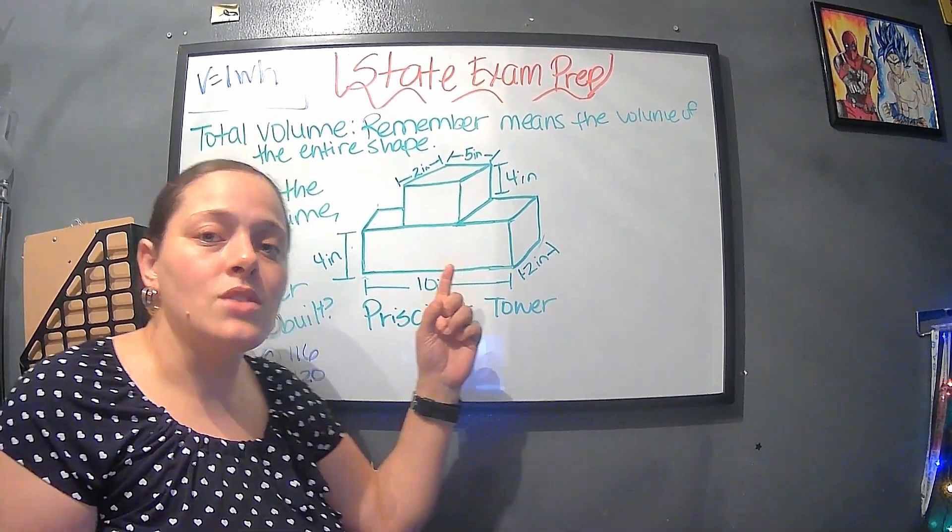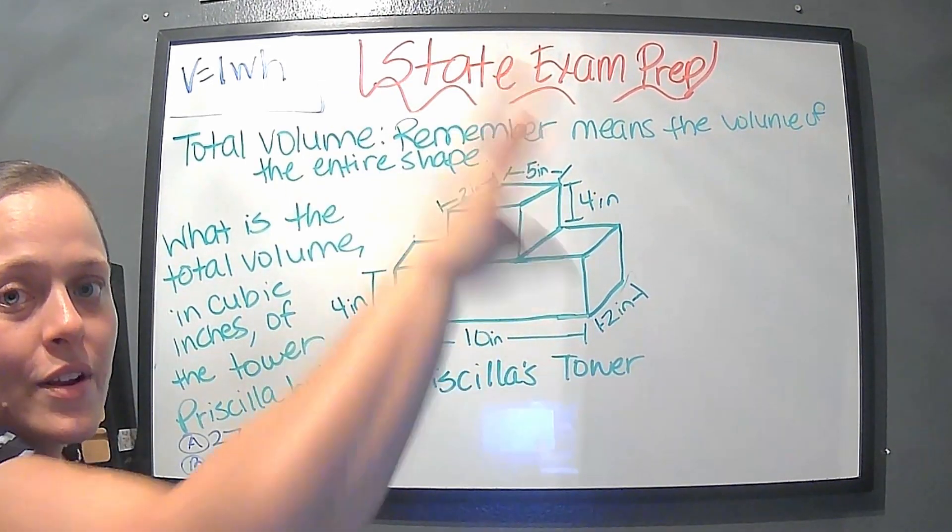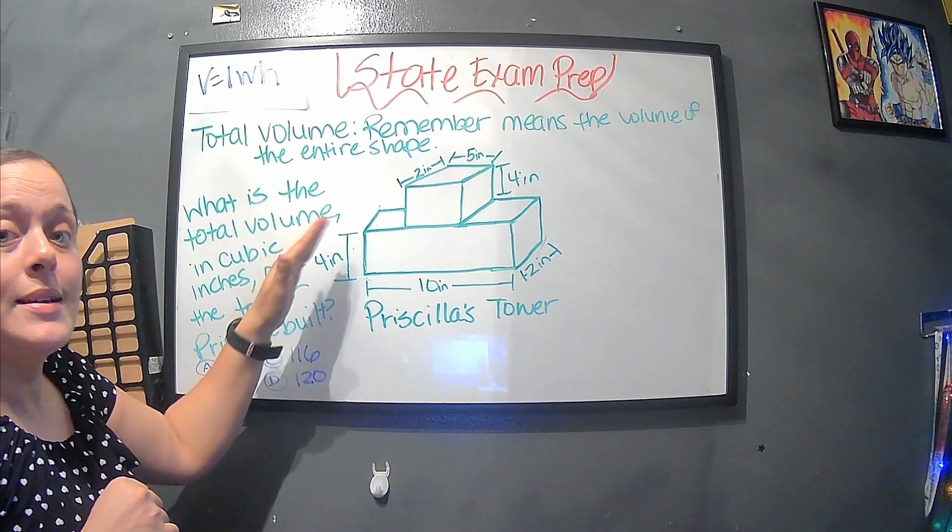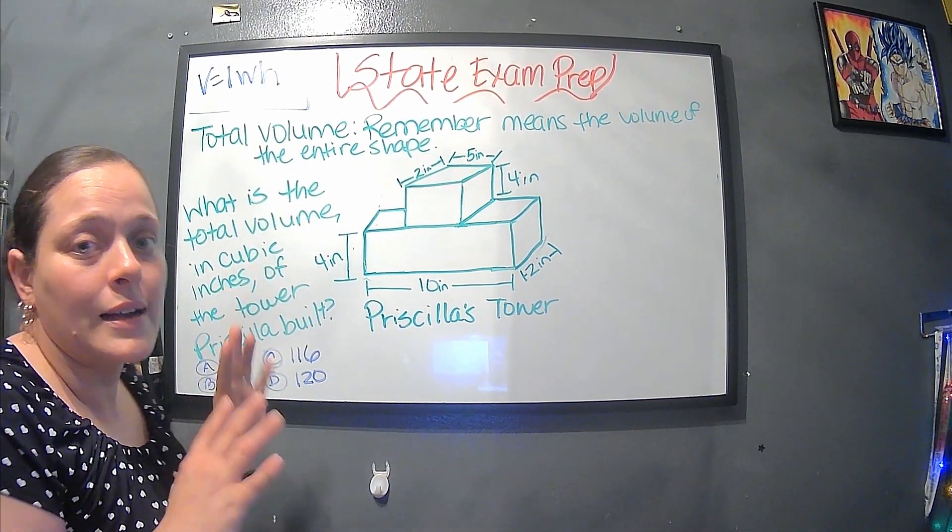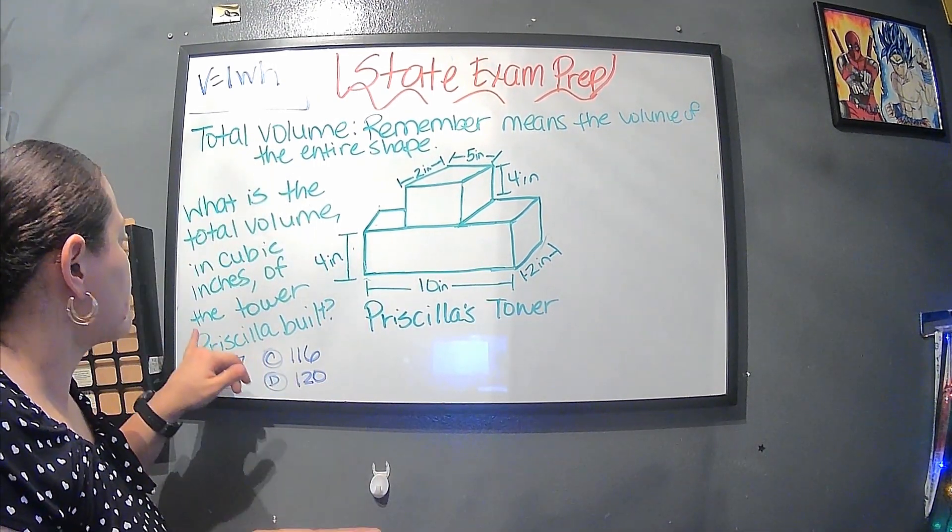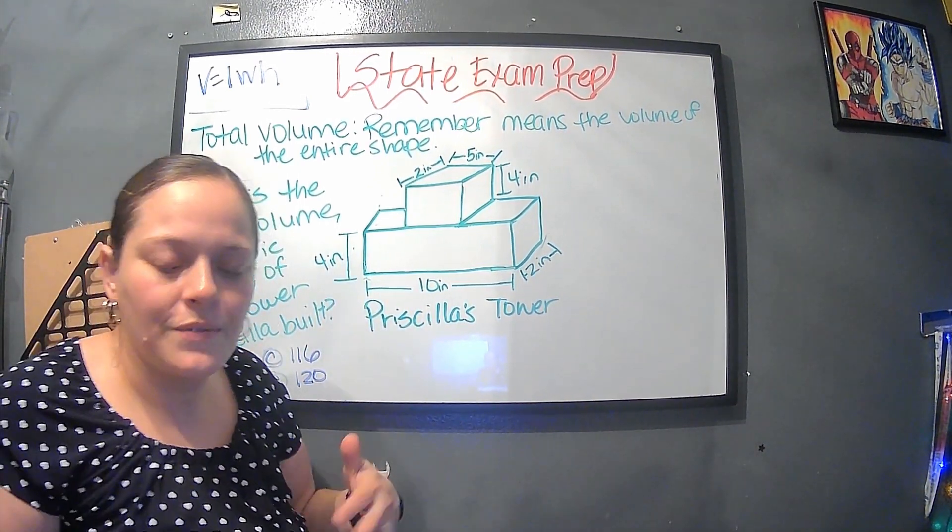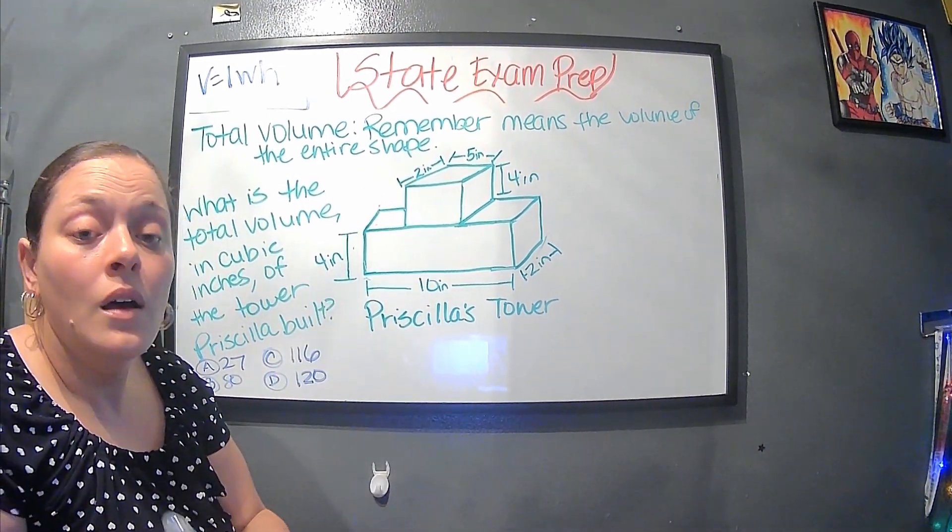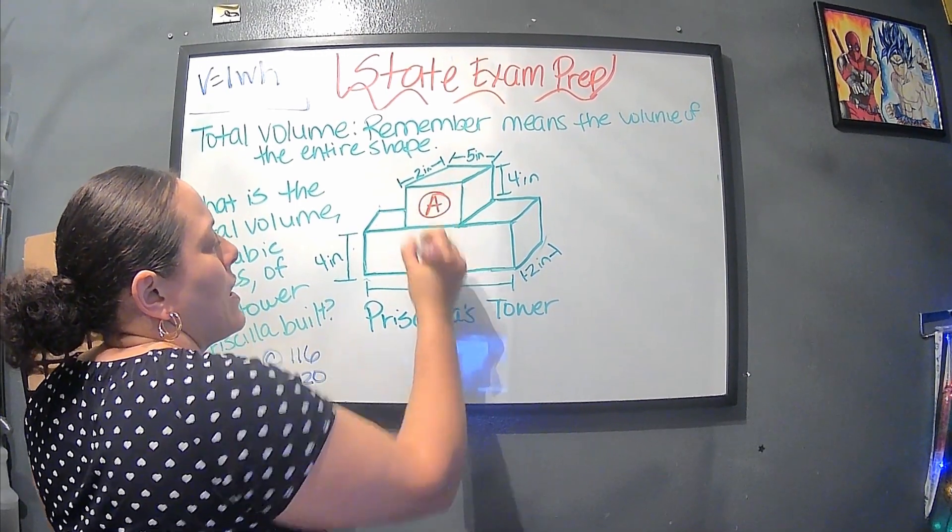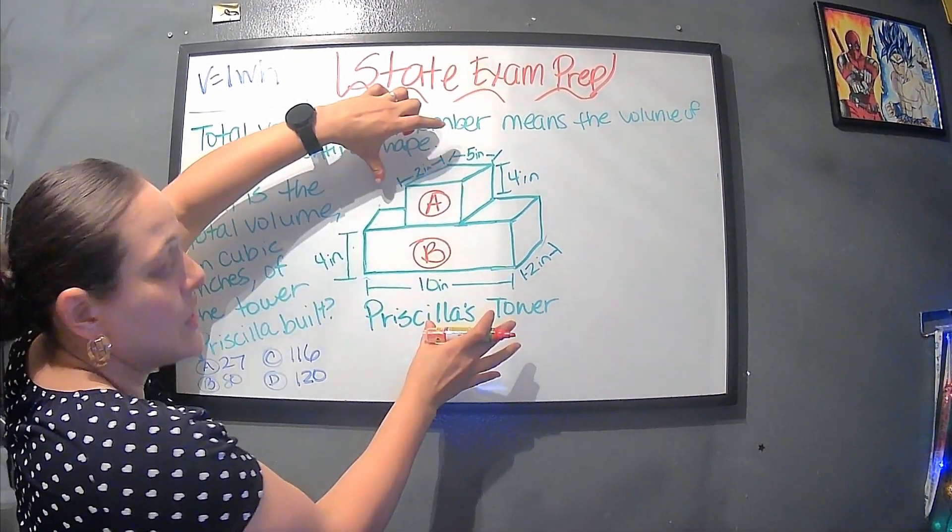Total volume. Let's talk about it. This means the volume of this whole shape. So this little piece and that little piece altogether is the total volume. That's what you need to remember. But let's see the question that they'll ask you. It says, what is the total volume in cubic inches? If you get scared with all these extra things, let's leave that out for a quick second. Of the tower Priscilla built. Now I use my name to change some stuff up.